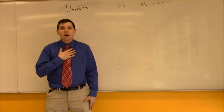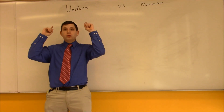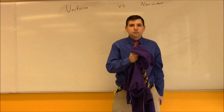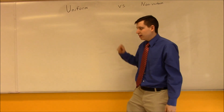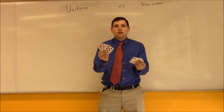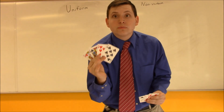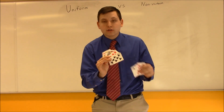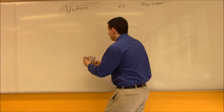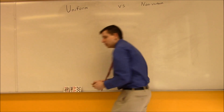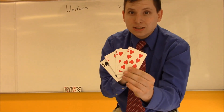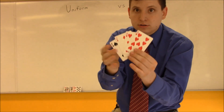Welcome to Mr. Meyer's Mad Magic. I'm Mr. Meyer, and today we're going to be talking about uniform versus non-uniform probability. So what is the difference? Here I have two stacks of cards. There is a uniform probability of choosing either black or red cards because there are two black cards and two red cards. For non-uniform probability, there is not an equal likelihood of choosing both black or red cards.